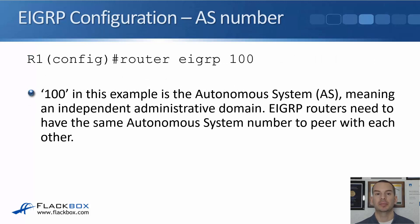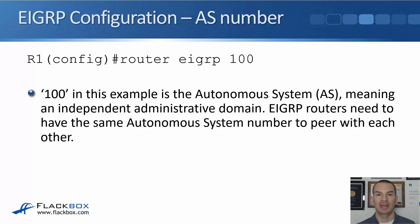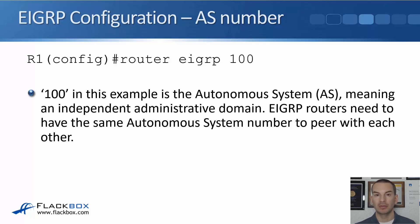Looking at the EIGRP configuration: to enable it, we say 'router eigrp' and then an AS number at global config. The AS is the autonomous system number, meaning an independent administrative domain. EIGRP routers need to have the same AS number to peer with each other. For example, two different organizations connected via an extranet, both using EIGRP internally, would use two different AS numbers. Organization A would have its own AS number and internal routes, and organization B would have a different AS number and its own routes — they would not peer or share routing information with each other.